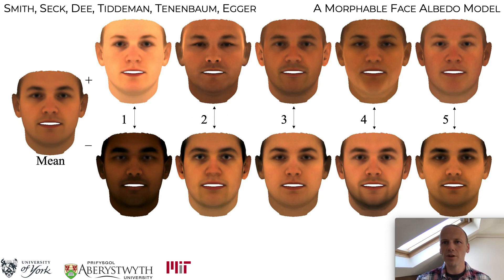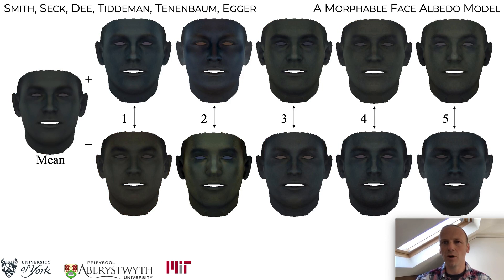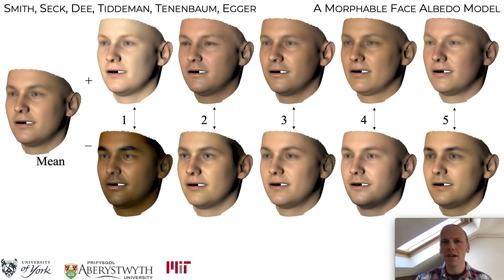We can now build our statistical model by applying PCA to the albedo maps. Here we show the first five modes of the diffuse model. Note the much richer variation in skin color relative to previous models and the complete removal of lighting effects. We do the same for the specular model, and we believe this is the first time the statistical variation of these maps has been explored. Combining the two models, rendering with a reflectance model in a point light source and applying nonlinear gamma, we arrive at a more natural visualization of the model.